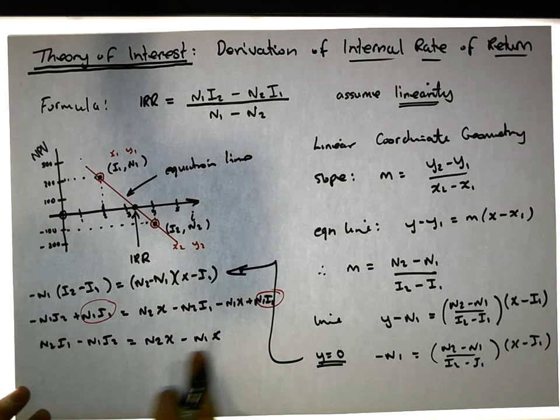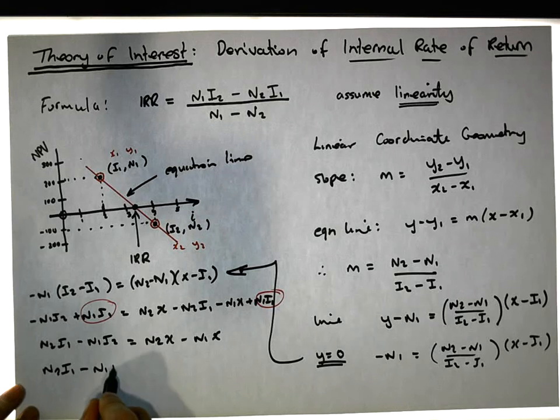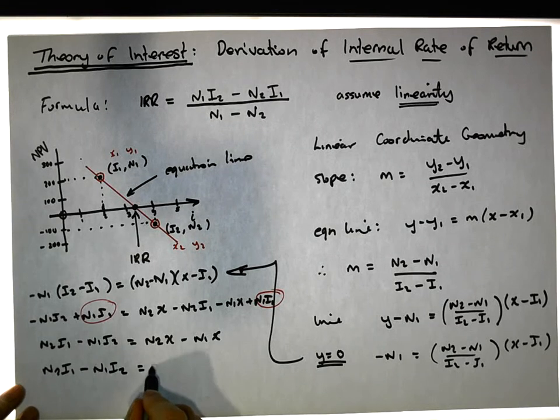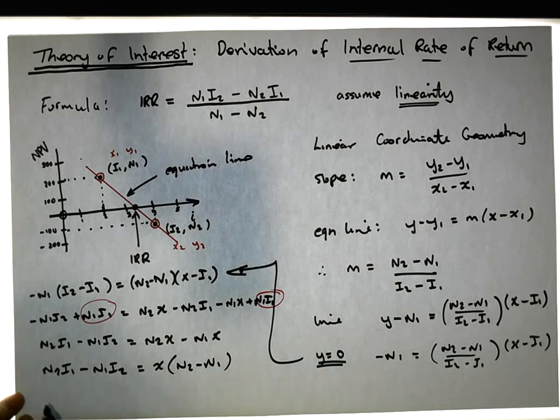Common value here which is the x. So now we have n2 i1 minus n1 i2 is equal to x times n2 minus n1. Solving for x, therefore we have x, which is the interest rate, the internal rate of return.